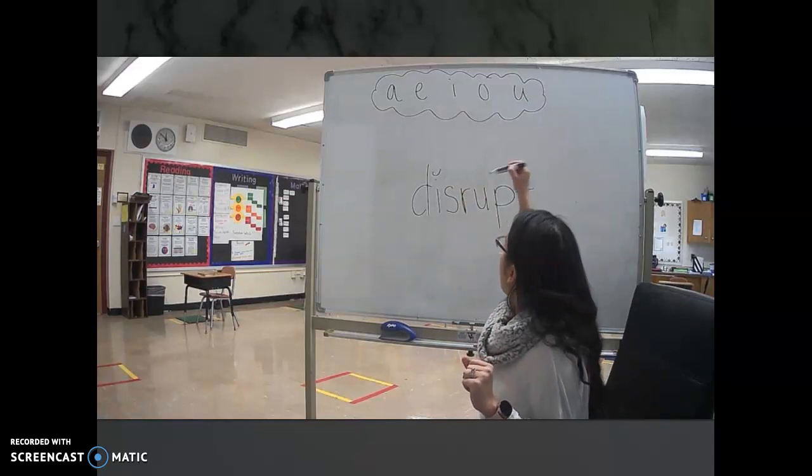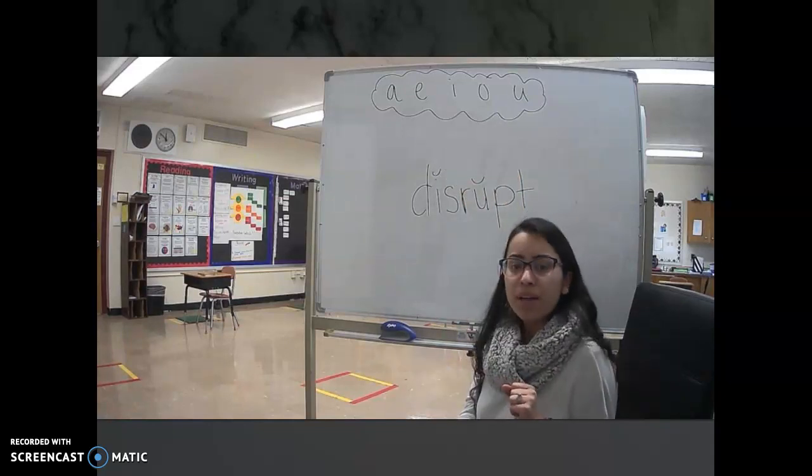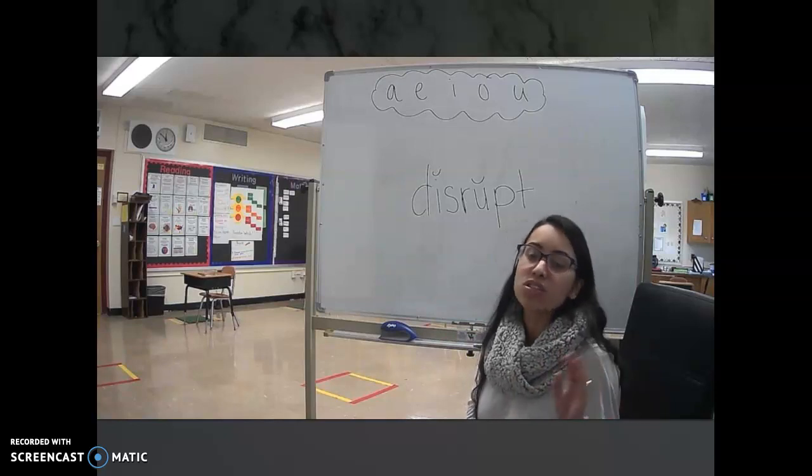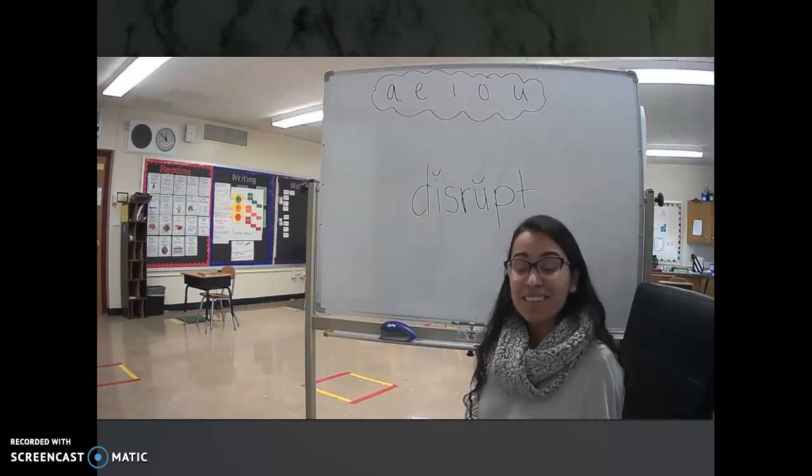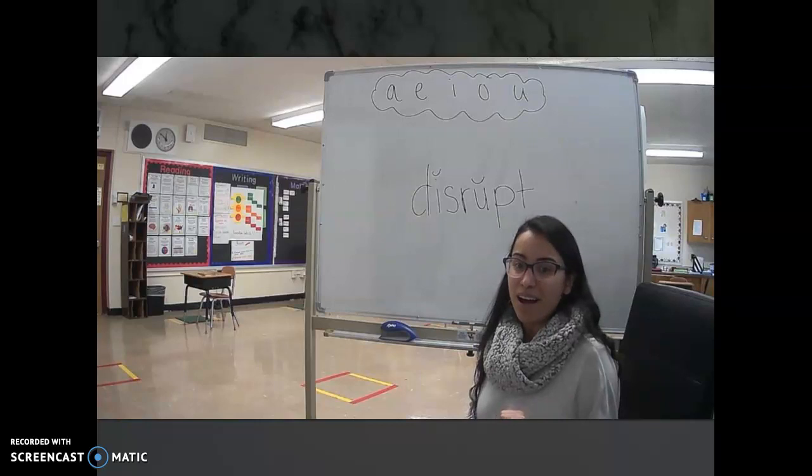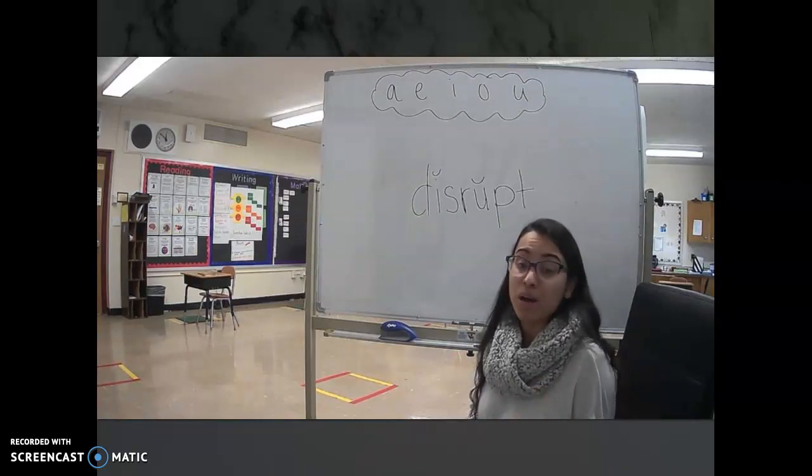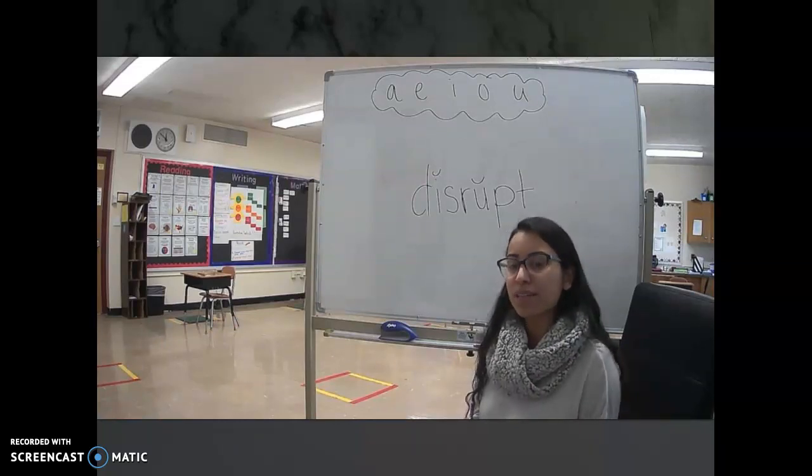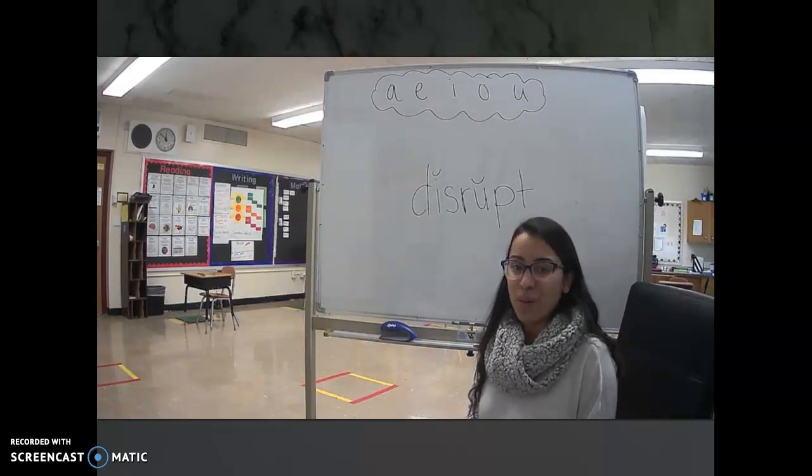We have the vowel I and we have the vowel U. Those two little marks that I just drew help us know that the vowel is soft. I said I and U said U. That's a soft sound. A hard sound would be if the vowel says its name. I. U. That's a hard sound. We want the soft sound. I. U.